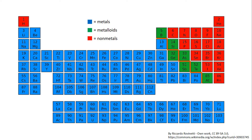So let's go ahead and begin. The first element that we're going to look at is aluminum. As you can tell from the color-coded periodic table, aluminum is a metal. For each of the 12 elements, please stop the video and consider those four properties: malleability, color, conductivity, and luster.